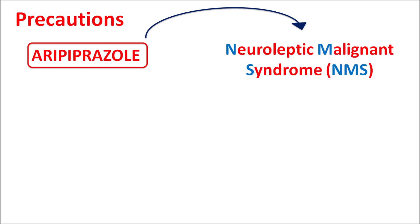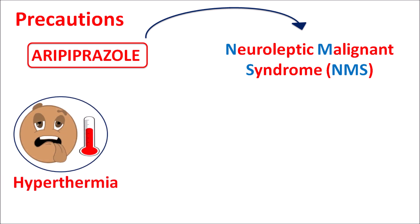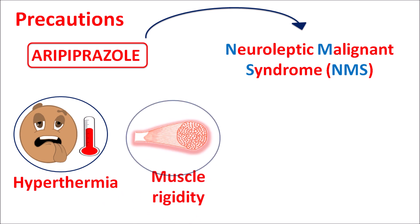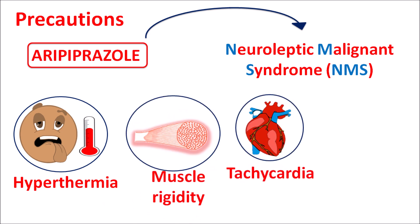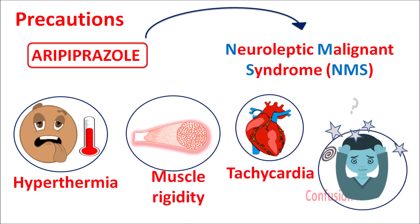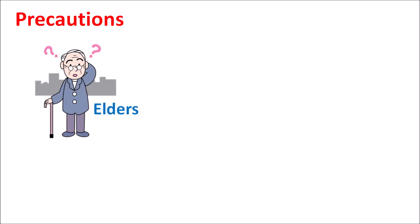Similarly, this drug can produce neuroleptic malignant syndrome, which is common with many antipsychotics. It can produce hyperthermia — a sudden raise in body temperature — along with muscle rigidity, tachycardia, and confusion within patients. Particularly, other drugs which produce neuroleptic malignant syndrome, such as antidepressants, should be carefully combined with aripiprazole.